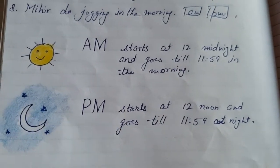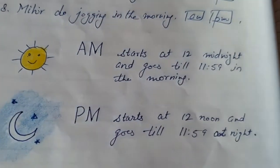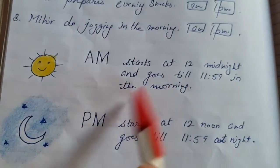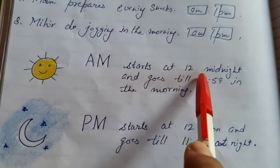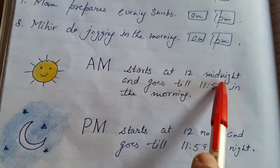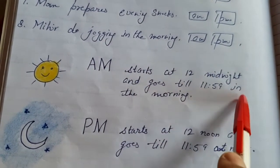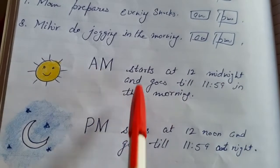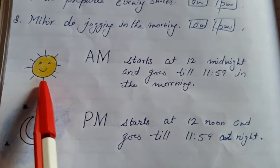AM — what is AM? AM starts at 12 midnight and goes till 11:59 in the morning. That is the morning time.